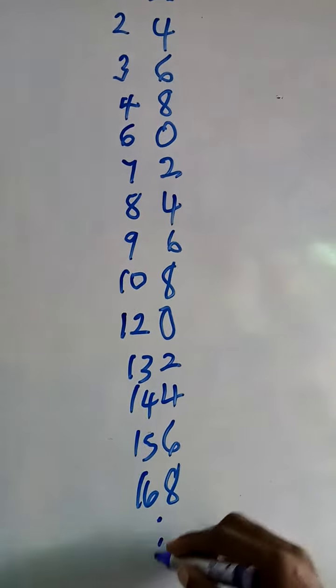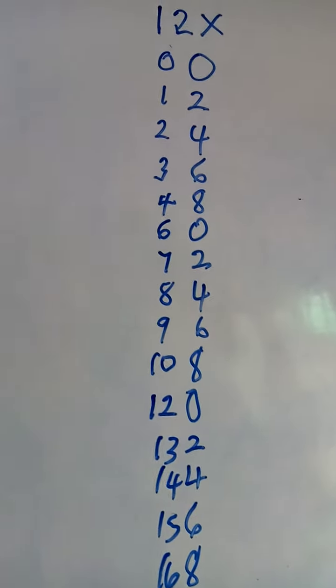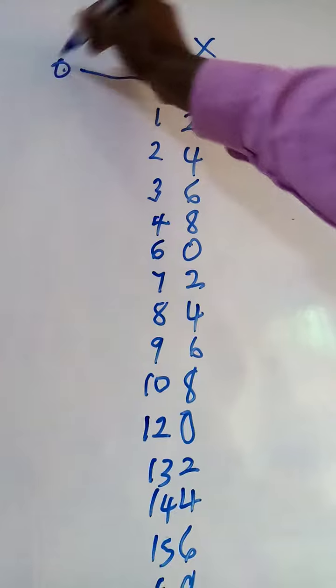In the multiplication of twelve, twelve times twelve. So, 12 times zero is what?